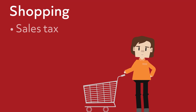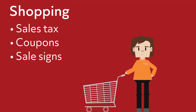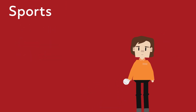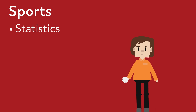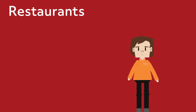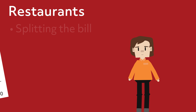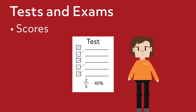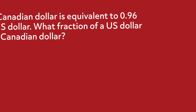Knowing how to convert fractions to decimals and percents is an important skill in the real world. Here are a few ways you may see fractions, decimals, and percents in your daily life. When shopping, sales tax and coupons often use fractions, and other sales signs are often written in percents. In many sports, like baseball and basketball, fractions are used to determine statistics such as shooting percentages. When going out to eat with a group of friends, you sometimes need to split the cost of the bill using fractions. Scores of tests and exams are often expressed as fractions or percents.